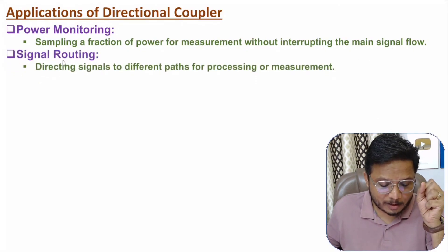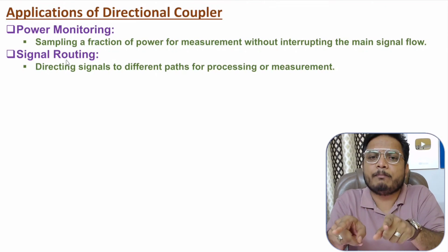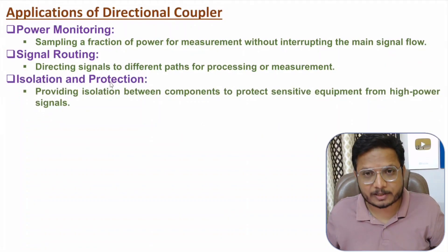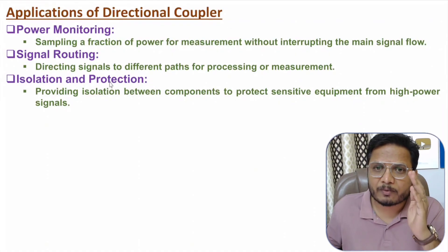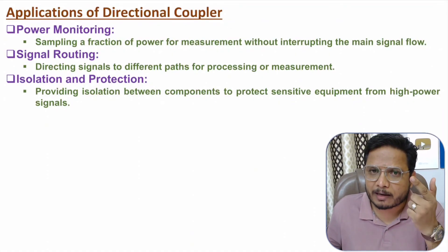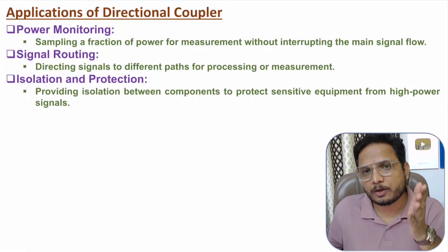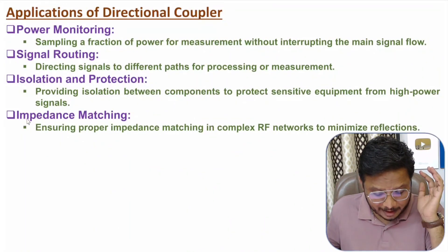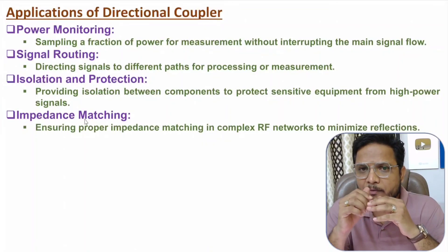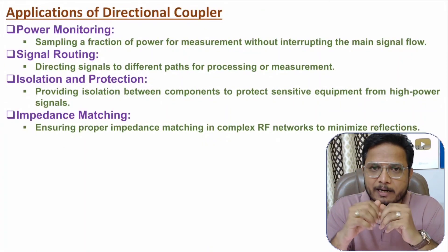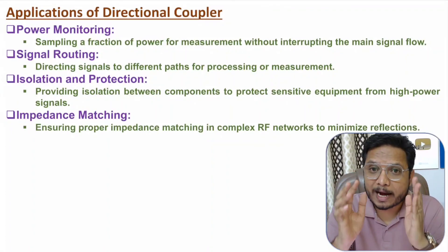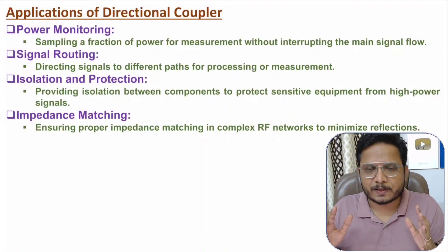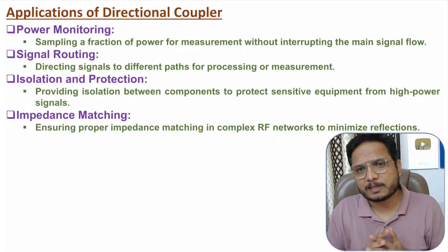The second application is signal routing — if you want to route a signal to multiple ports, that can be done using a directional coupler. The third application is isolation and protection — the isolated port can be used to protect sensitive components from high power signals. The fourth application is impedance matching — with proper impedance matching at the ports, one can minimize reflection and transfer power with maximum efficiency.